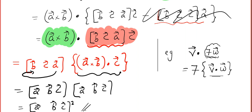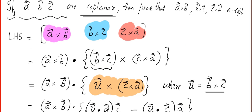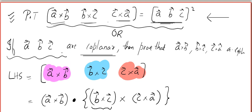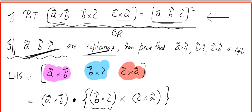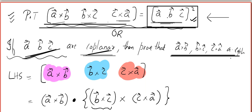I'll explain the second part before wrapping up. We proved that STP(A×B, B×C, C×A) = [A,B,C]². For the coplanar version: if A, B, C are coplanar, [A,B,C]=0, so the right-hand side becomes zero, which means the left-hand side also vanishes, proving A×B, B×C, C×A are also coplanar. Practice a lot — see you in the next video. Bye!